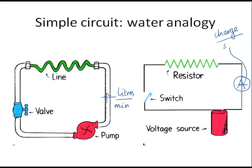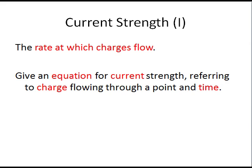We usually say per second. So if current strength is the rate of flow of charge, how would you write a formula for current strength?